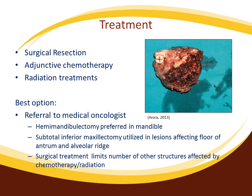Treatment options include surgical resection of the tumor, adjunctive chemotherapy, and radiation treatments. Hemimandibulectomy is preferred in the mandible, while maxillectomy is difficult due to surrounding structures; a subtotal inferior maxillectomy may be utilized for lesions affecting the floor of the antrum or alveolar ridge. Surgical resection is the preferred method as it limits the number of structures affected. A referral to a medical oncologist would be appropriate, as they are experienced with cancers and complications that may reach beyond the scope of dentistry.